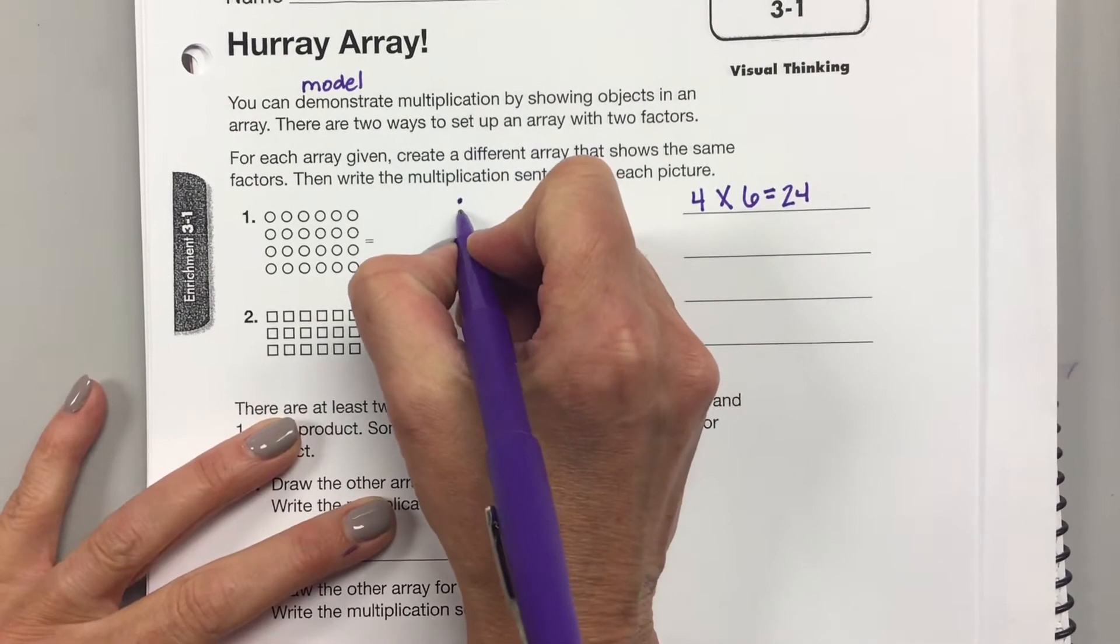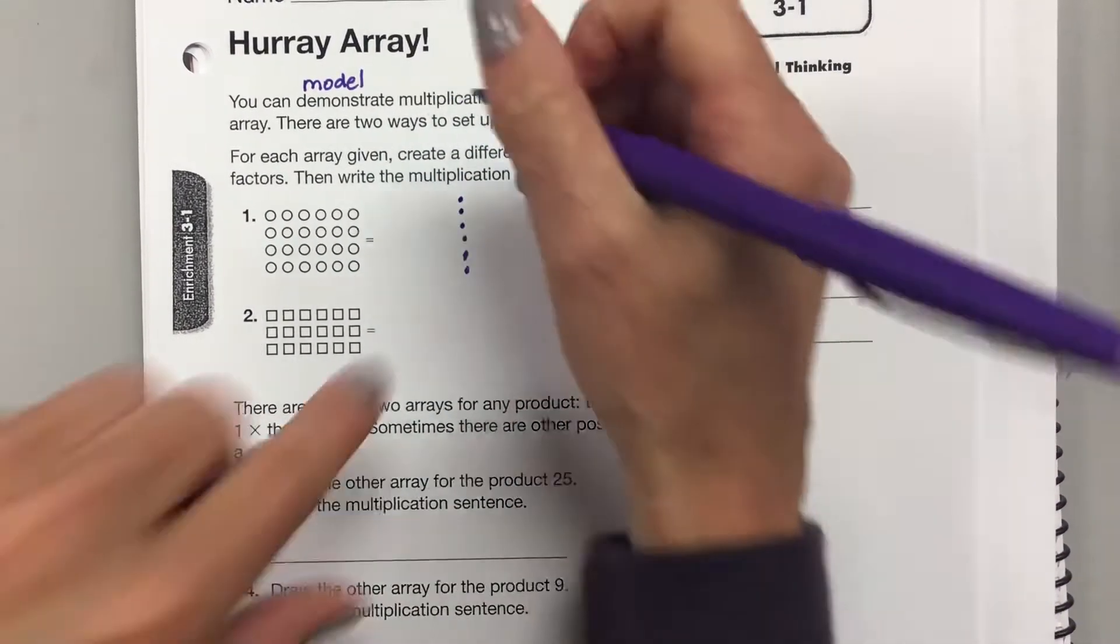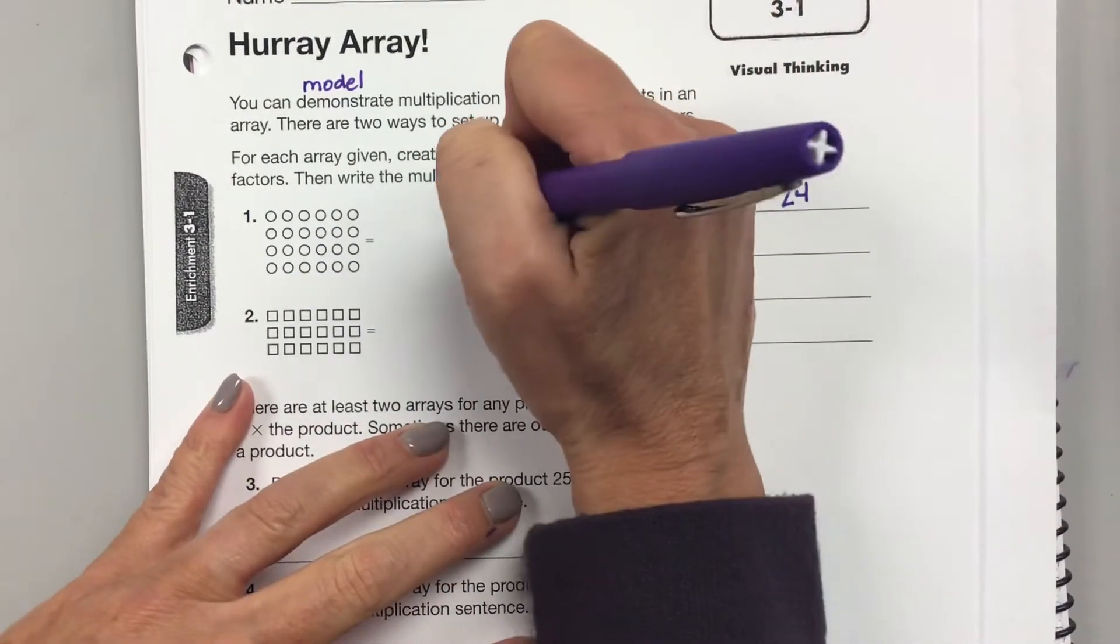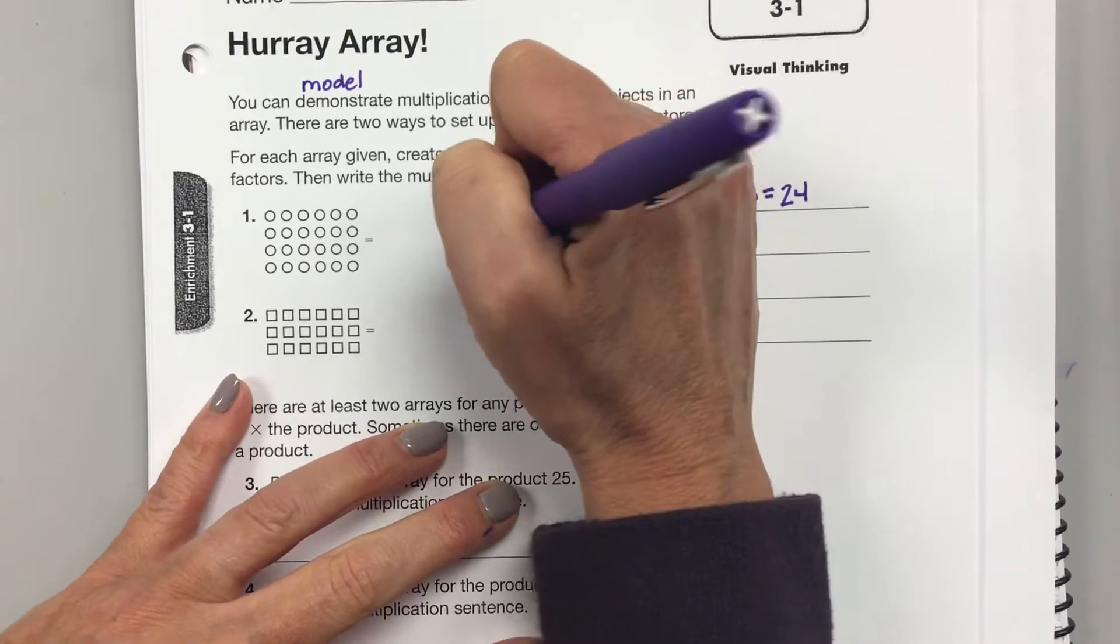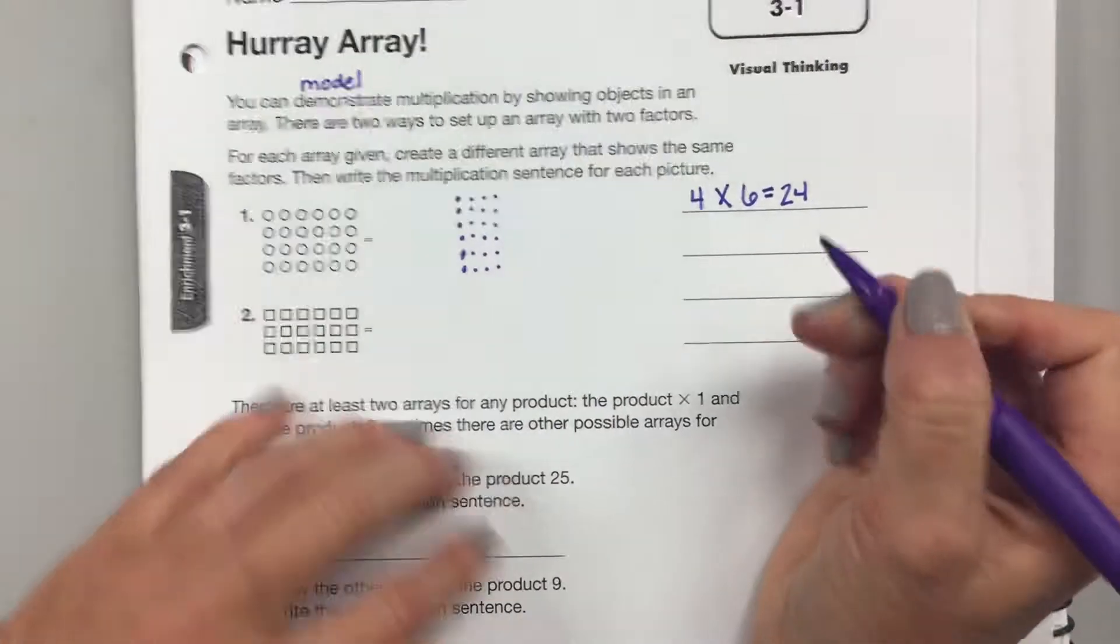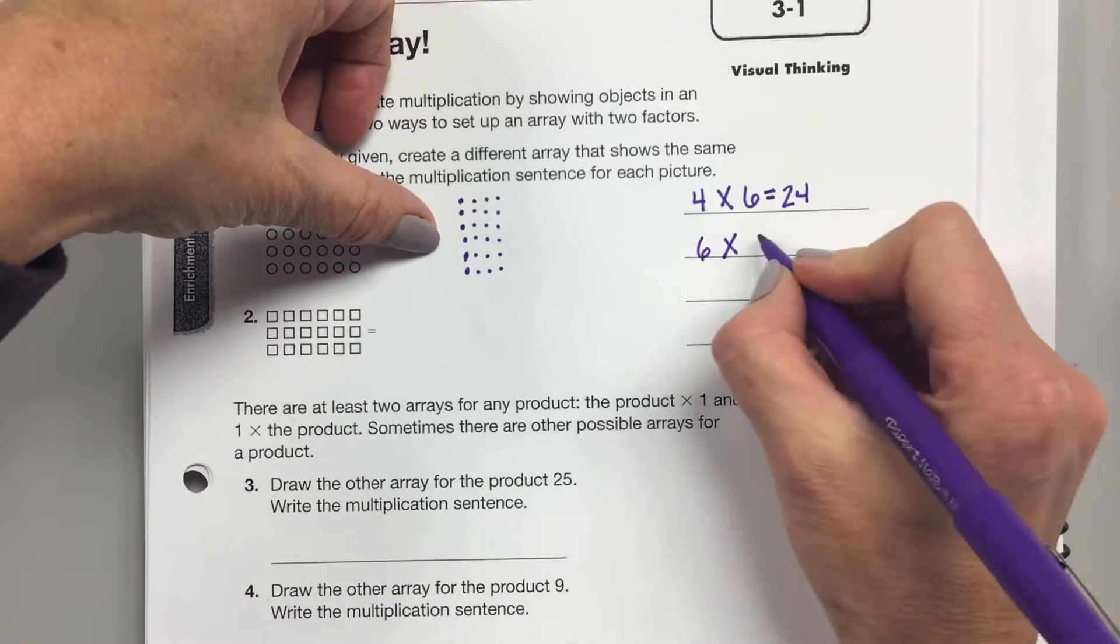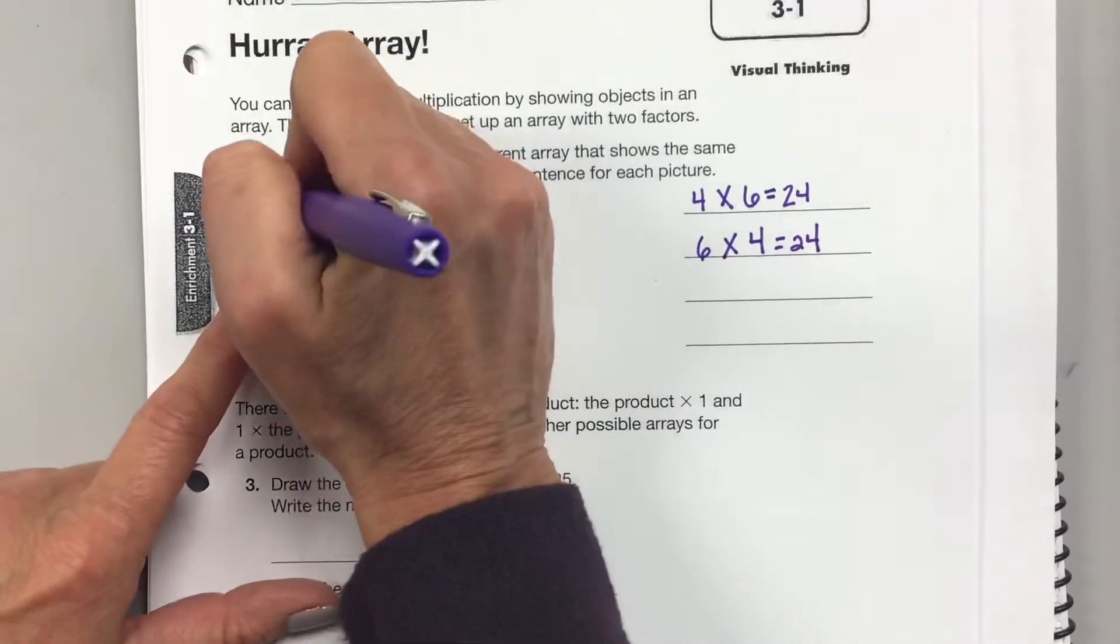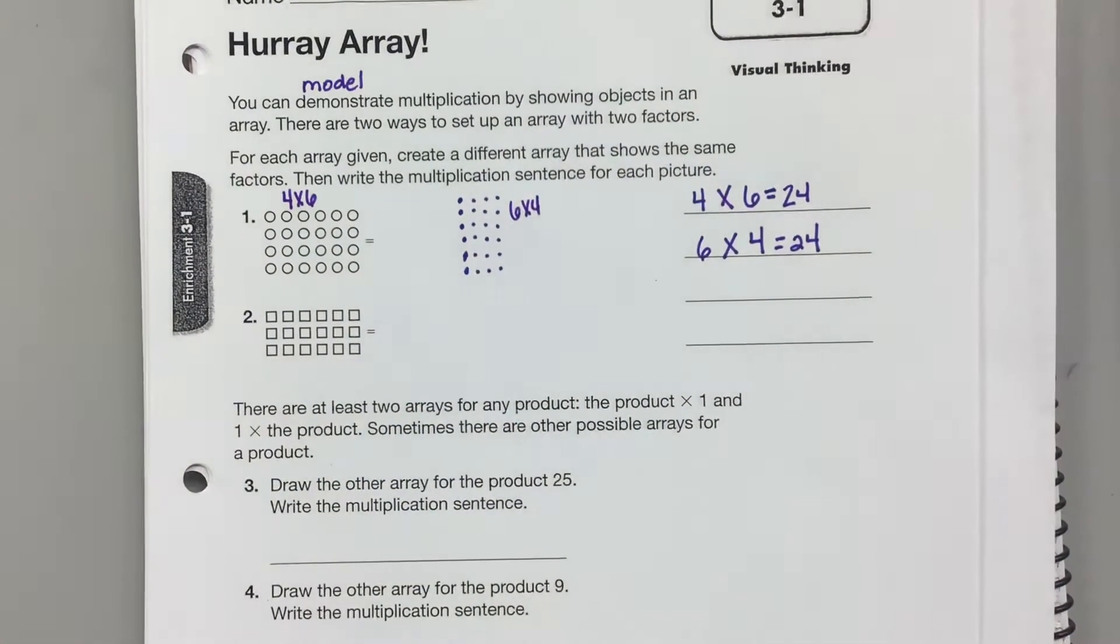So go ahead. And an array should be neatly in line, not all over the place. How many are going to be in each row? Four. Four. Four. Okay, so this is showing six rows of four. So this is four times six, or four rows of six, and this is six times four, or six rows of four.